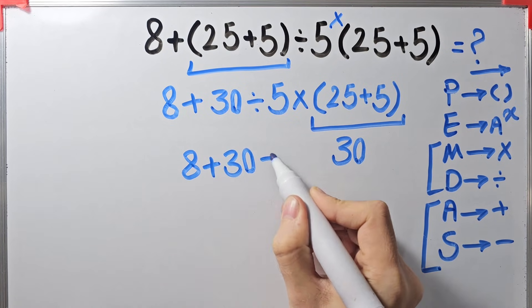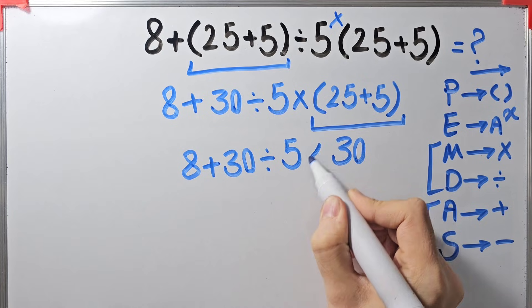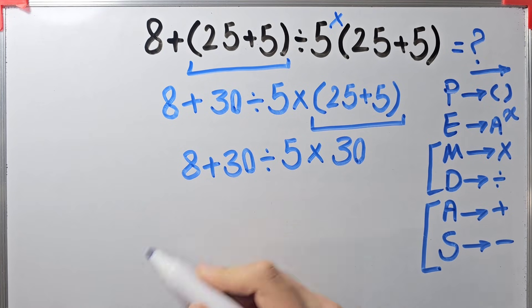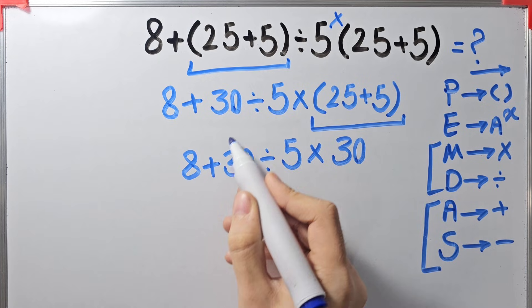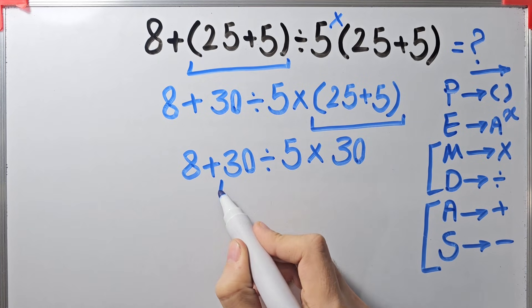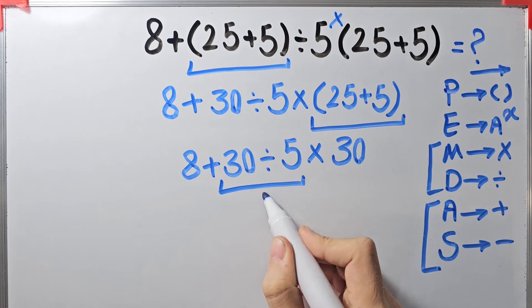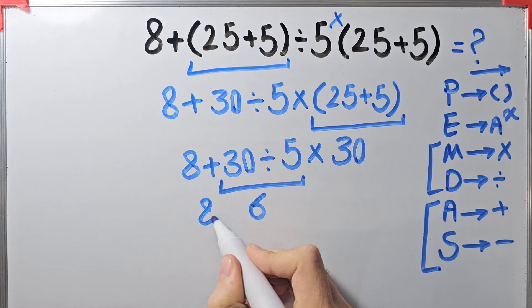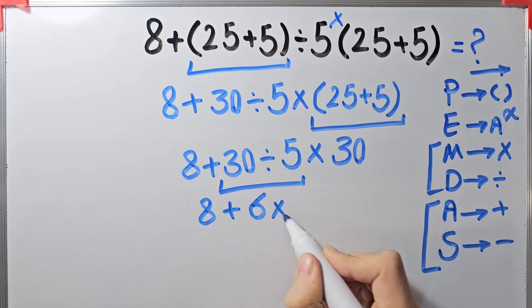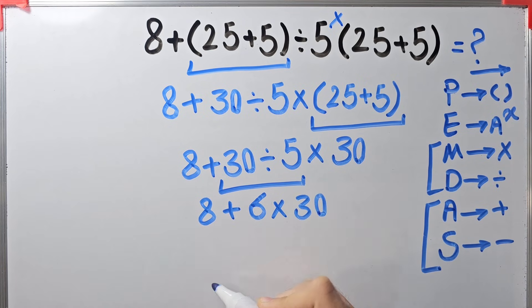In this step we have addition, division, and multiplication. First we simplify this division. 30 divided by 5 equals 6. Now the question is 8 plus 6, then times 30. Now we have addition and multiplication.